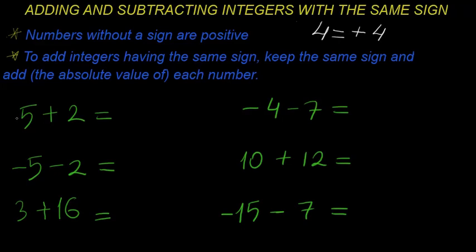In the first example, five has nothing in front of it, so that means it is positive five. Positive five plus two — both are positive, so the answer will be positive. We simply add five and two: five plus two equals seven. The answer is positive seven, or we can just write seven.